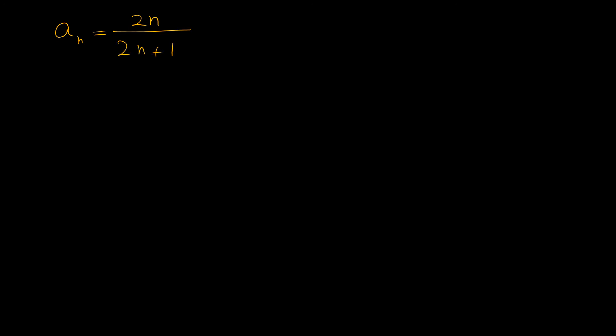Now consider this example: 2n over 2n+1. The first term of this sequence is 2/3, the second term is 4/5, the third term is 6/7, the fourth term is 8/9, and so on.